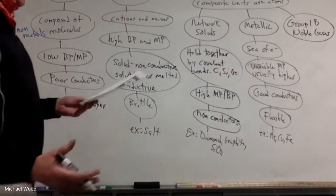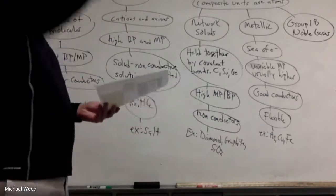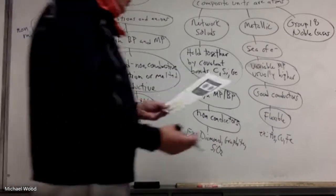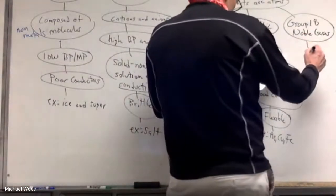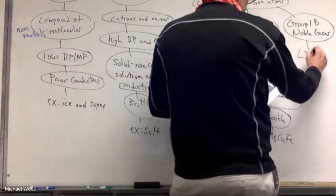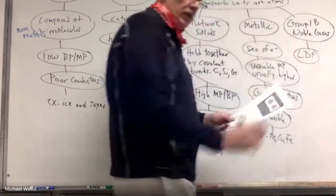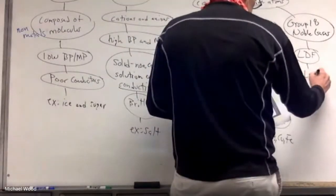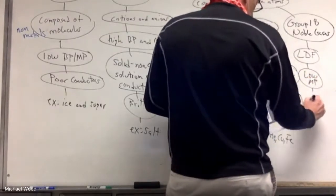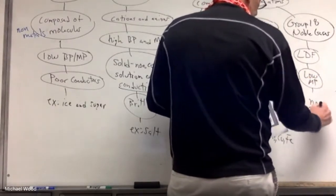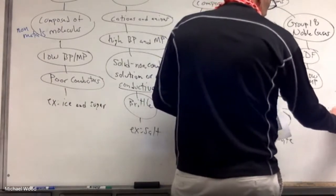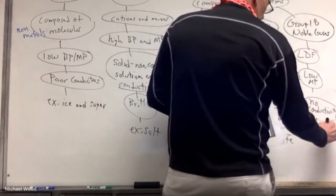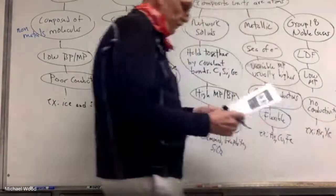Okay, then the group 18, which are the noble gases, which really they're not solids. If we were to look over on the periodic table, they see them all in red. They are gases. But at really cold temperatures, they would become solid. So they're held together by LDF, a weak intermolecular force. So they have a low melting point. They have no conductivity. And examples would be any of the noble gases, argon and xenon.